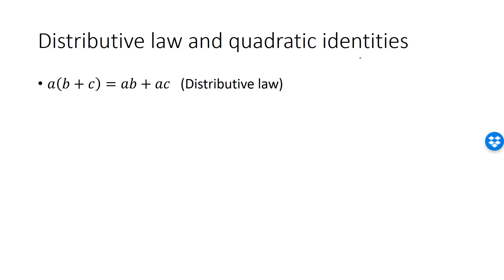From the distributive law, we can derive a whole set of quadratic identities. The first one is called the right distributive law.